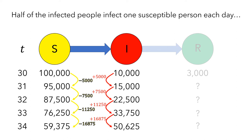Pause the video and think about how you might write a formula for the number of susceptible people. It would probably start off the same, since we're starting with 100,000 susceptible people on day 30. And since 5,000 susceptible people got infected the next day, it's tempting to try something similar to the previous scenario, using 5,000 times t minus 30. However, that formula would indicate that 5,000 people would get infected each day, but there were 7,500 new infections on the second day, and that number kept increasing. So writing a formula for this scenario would be pretty challenging, and we need a slightly different way to think about what's going on.